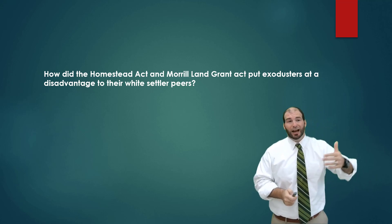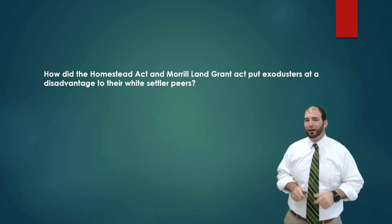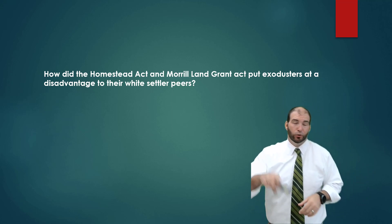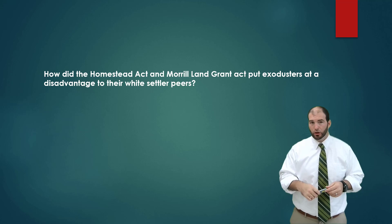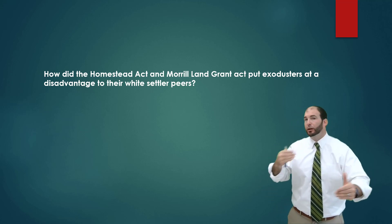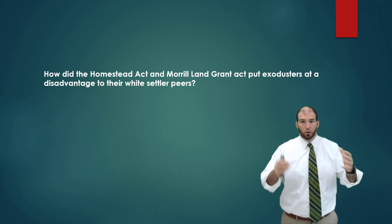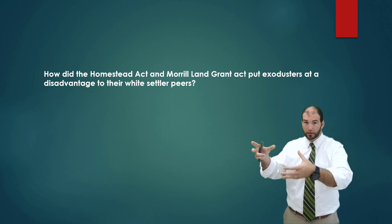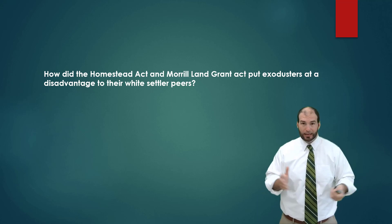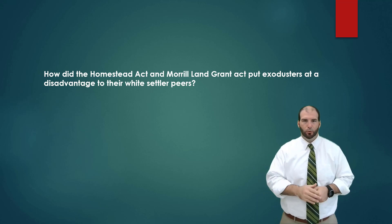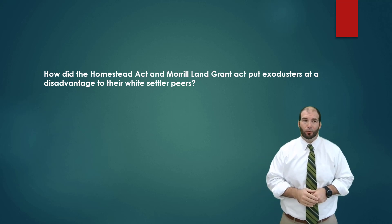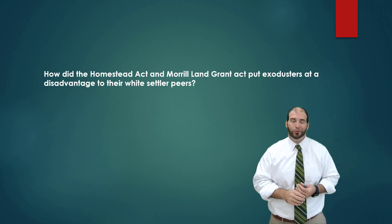The question to answer is: how did the Homestead Act and the Morrill Land Grant Act put exodusters at a disadvantage compared to their white settler peers? While they were given the land, why were they still put at a disadvantage due to federal and state governmental laws that eliminated the ideal that everybody is supposed to be equal? Answer that, and we are done for the day. I'll see you guys tomorrow.